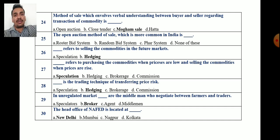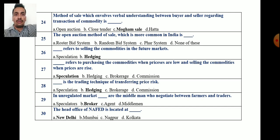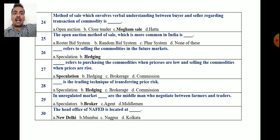Question 25: The open auction method of sale which is more common in India — as we know, there are different open auction methods: roaster bid, random bid, pahar system, or none of these. Out of these four, the correct answer is roaster bid system.